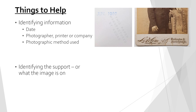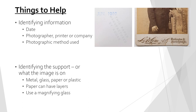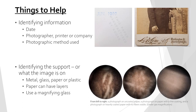Determining the support, or what the photo is on, is a key step in identifying photographs. Photographs can be found on metal, glass, paper, and plastic supports. Paper can specifically be tricky. Oftentimes paper has an additional coating or two on top, and sometimes these coatings are so thick that you cannot see the paper through them. Using a magnifying glass can help you see the paper fibers. Here are some close-ups of different paper photographs. The first is on uncoated paper where the fibers are clearly visible. The second has a thin coating and the fibers are only partially visible. And the last has a thick coating where the fibers are completely obscured.